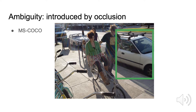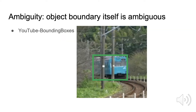Ambiguity can also be introduced by occlusion. You can see the trunk of the car; however, it is not inside the labeled bounding box. When the object is partially occluded, the bounding box boundaries are even more unclear. This is an example from the Bounding Boxes dataset, where the left boundary of the train is very hard to draw because of the occluding tree.